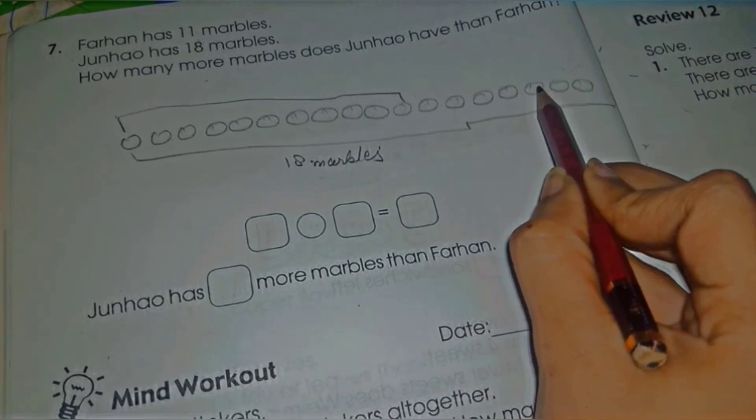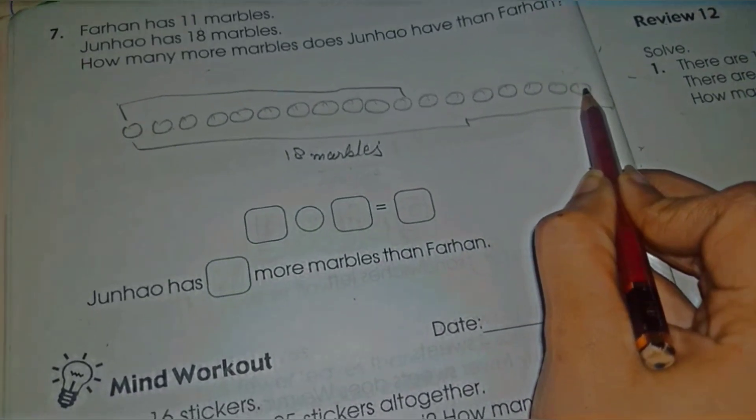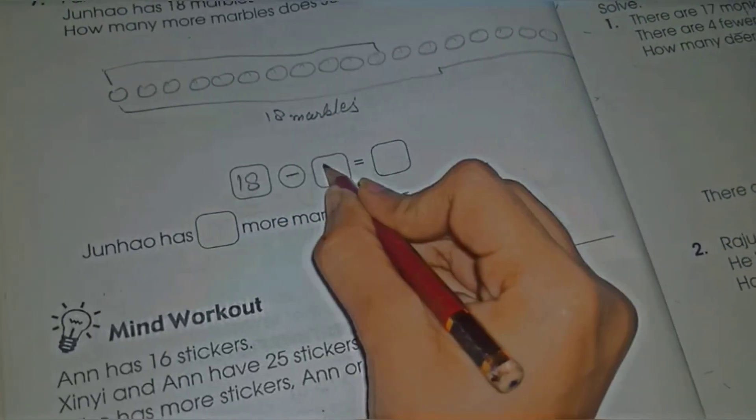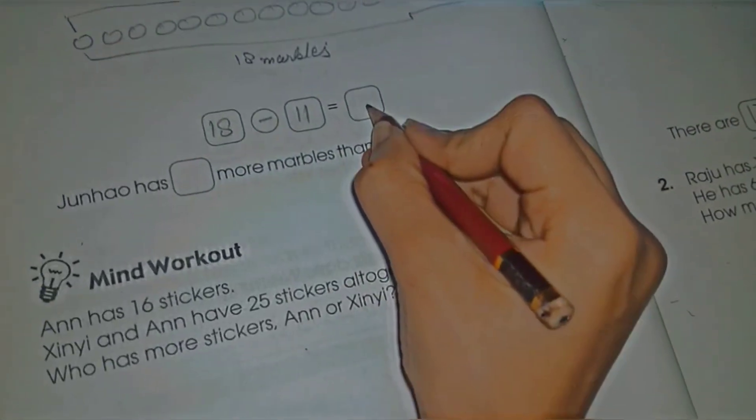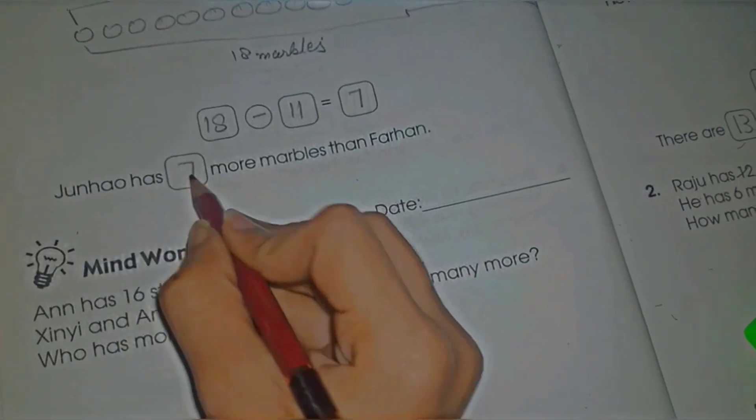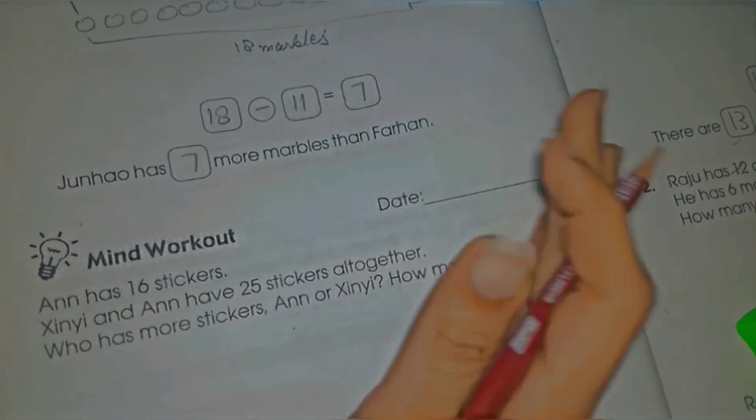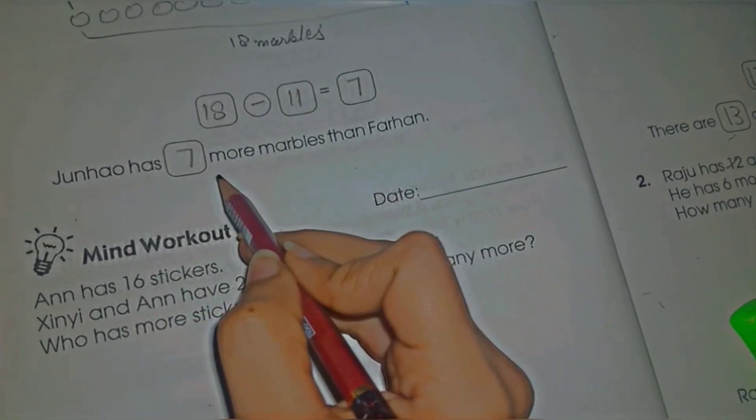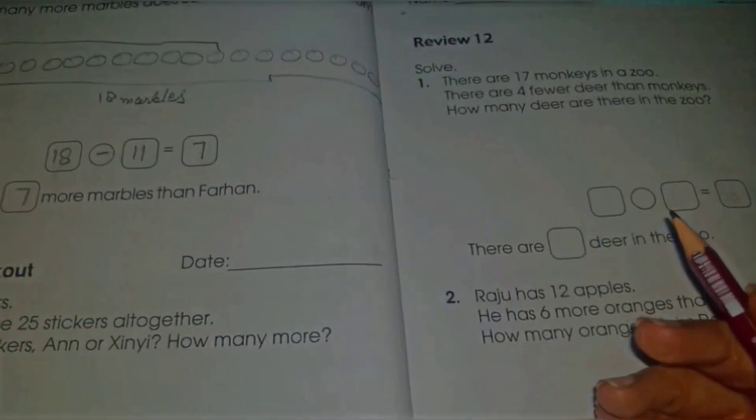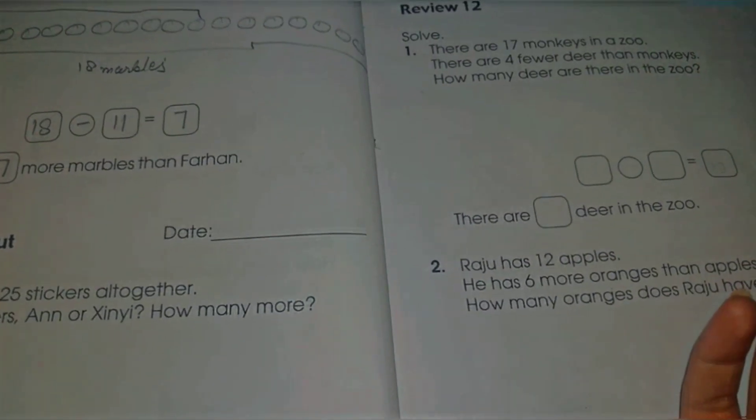So how many marbles are left? 1, 2, 3, 4, 5, 6, 7. It means 18 minus 11 equals 7. Janao has 7 more marbles than Farhan. It means Janao 7 marbles. Got it? I hope you will enjoy this video and it will be helpful for you.